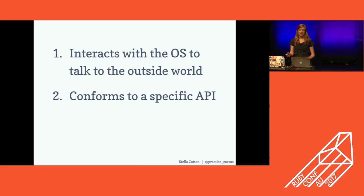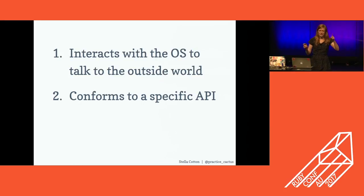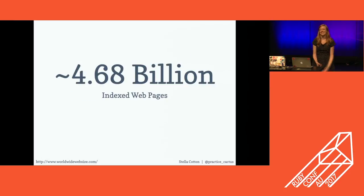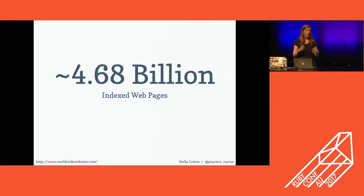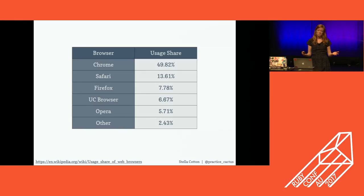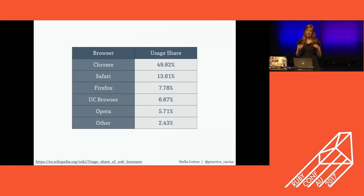This may not sound like a big deal, but let's think — how many web pages are out there today? It's 4.6 billion indexed web pages, and that number just goes up every time you check. They're being served up from servers all over the world and viewed by mostly five different browsers on desktop and mobile. The fact that all of these clients and all of these servers are all speaking in the same standardized language is mind-blowing.